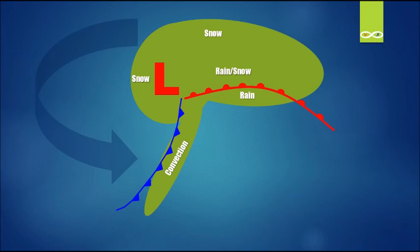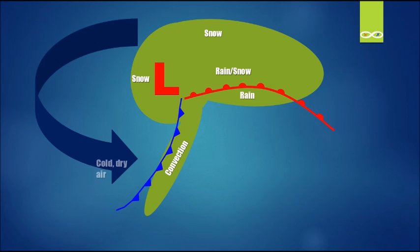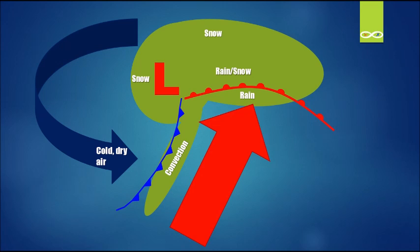Now let's tie in the different air masses. We have our cold dry air mass coming in from the northwest — you can see how there's no precipitation around that area because of course it is dry. We have warm moist air coming in from the south.